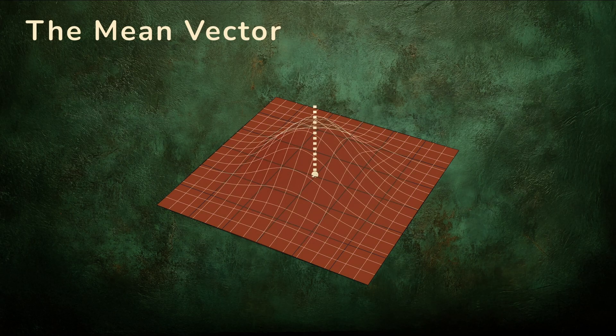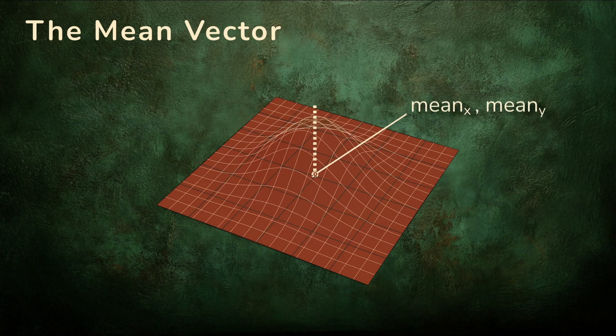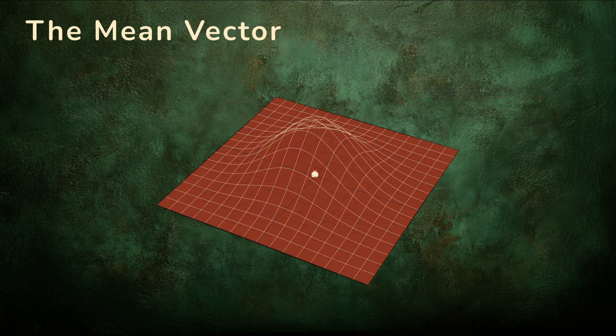We describe this point with two numbers, the mean in the x direction and the mean in the y direction. Together, these form the mean vector. Another way to think of the mean vector is as a pair of coordinates that tells us where the center of the bell surface is located.